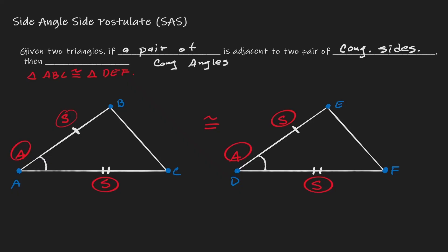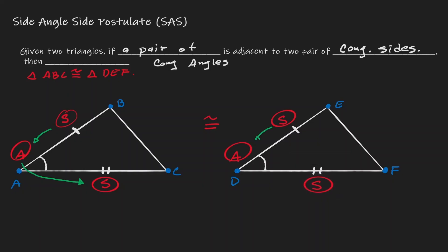One thing I'd like to point out is that the order matters. In the triangle on the left, we go from side to angle to side — side-angle-side. And that's the same order we have with the other triangle: a congruent side followed by a congruent angle, and that congruent angle followed by a congruent side. Side-angle-side.